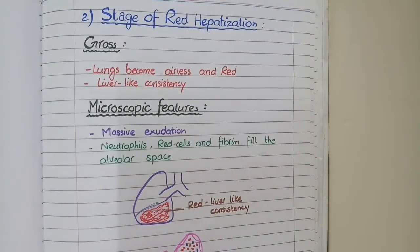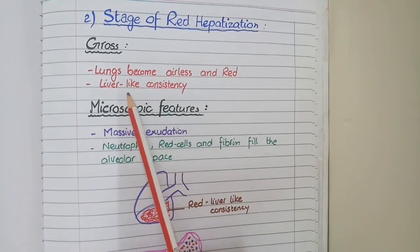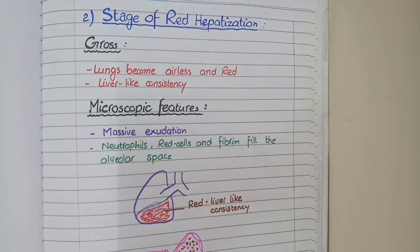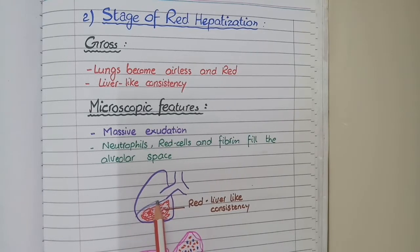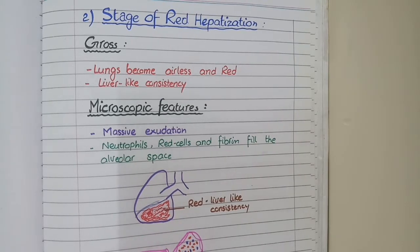The second stage of lobar pneumonia is called the stage of red hepatization. Red implies that the affected lobe of the lung will become dark red, and hepatization means that the affected lobe of the lung will have a liver-like consistency. Liver is a solid organ which does not contain air, whereas lungs are balloon-like organs full of air. In this stage, there is so much edema in the alveoli that they become soft and liver-like in texture — hence the term hepatization. You can see in this diagram that the affected lobe is red and soft.